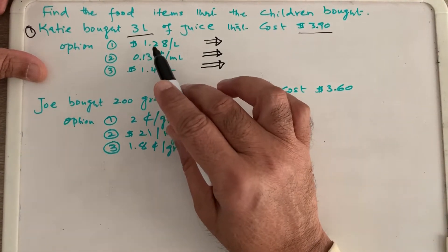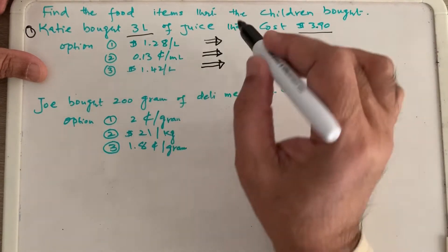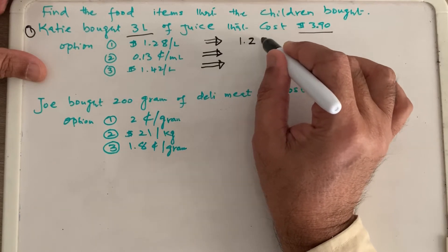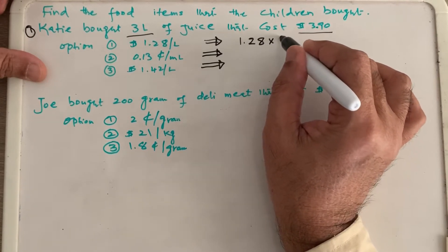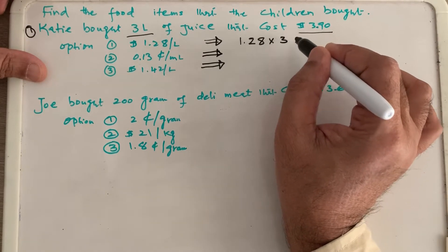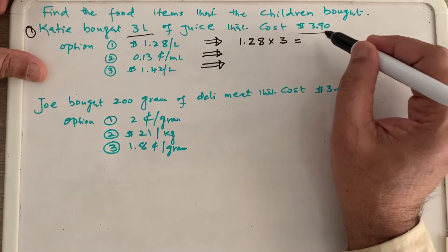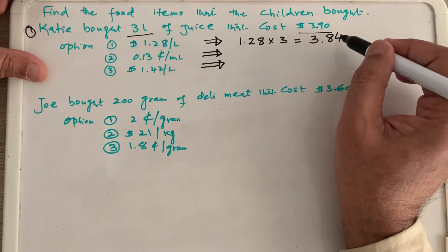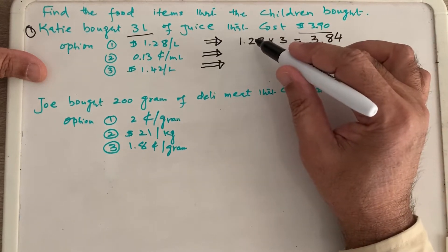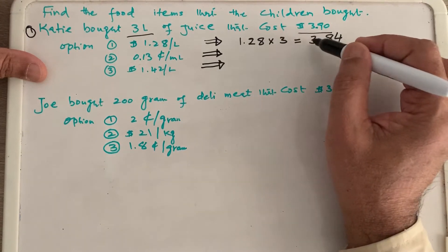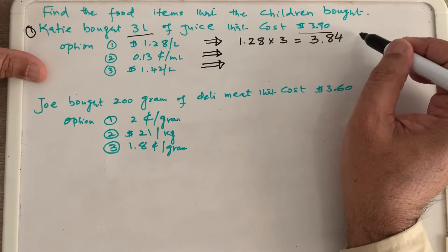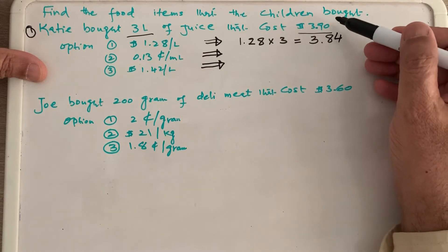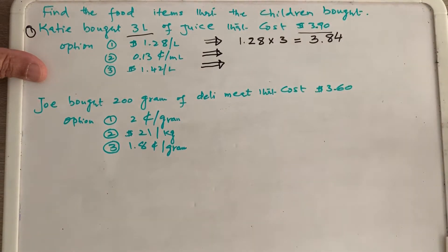Option 1 is $1.28 per liter. So how much will three liters cost? One liter cost is $1.28, so times 3 liters. If you multiply it, 3 times 8 is 24, carry 2; 3 times 2 is 6, plus 2 is 8; 3 times 1 is 3 — that gives $3.84. But this is not correct because she paid $3.90, so that option is not correct.